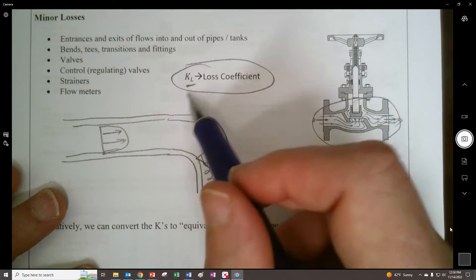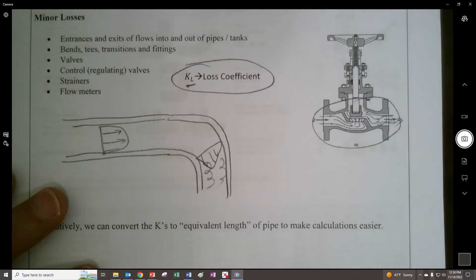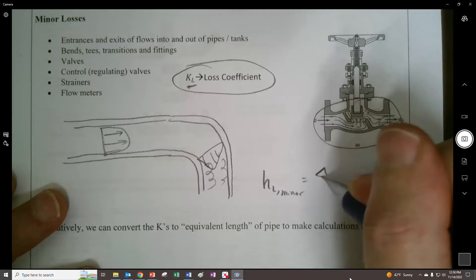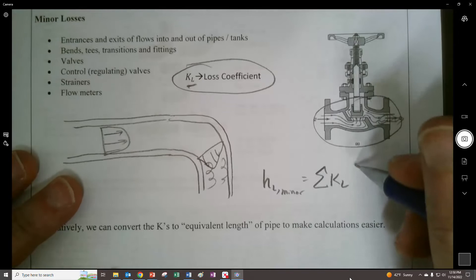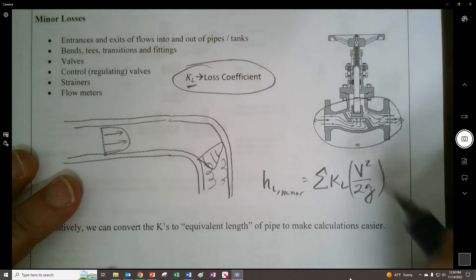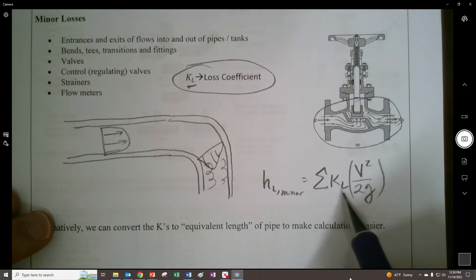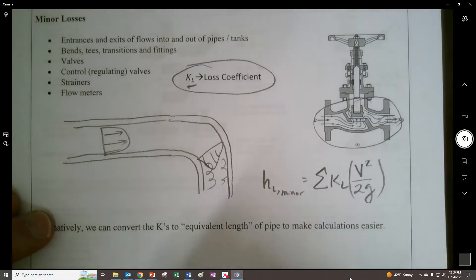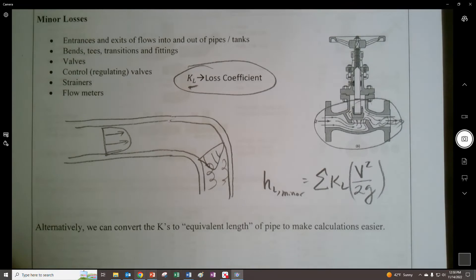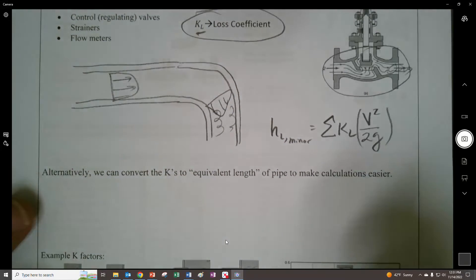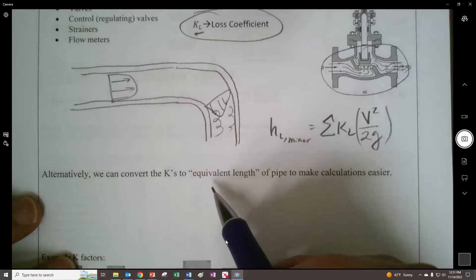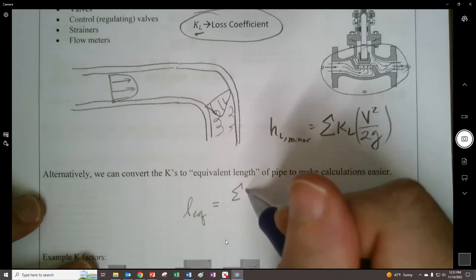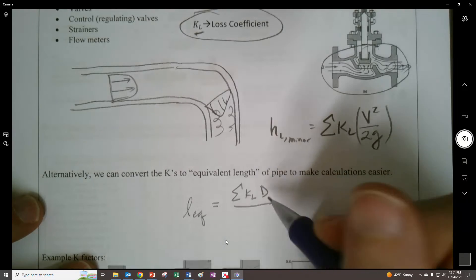As you can see in this view right here, where they're drawing extreme lines, you can see through a globe valve there can be quite a few disruptions that are taking place, and those are the things that cause losses. And what we do to try to quantify those is have these KL's, these loss coefficients, that we put into our calculations. So these minor losses, we could sum them all up, all the KL's, and multiply them by v squared over 2g.